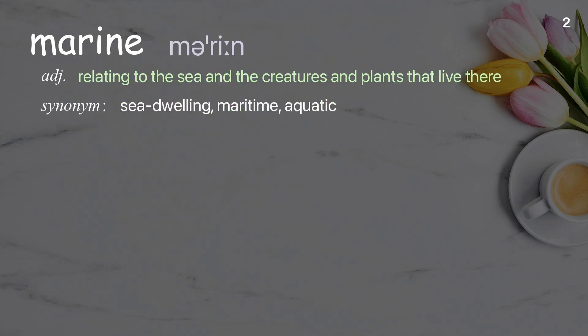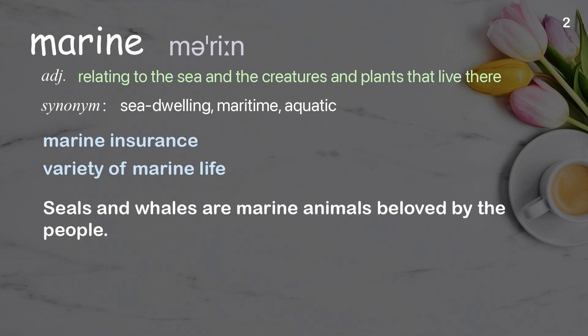Marine: Relating to the sea and the creatures and plants that live there. Examples: Marine insurance. Variety of marine life. Seals and whales are marine animals beloved by the people.